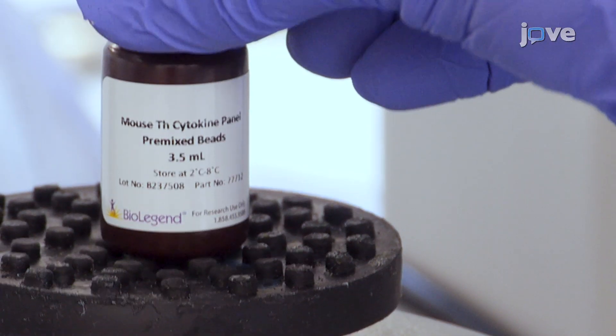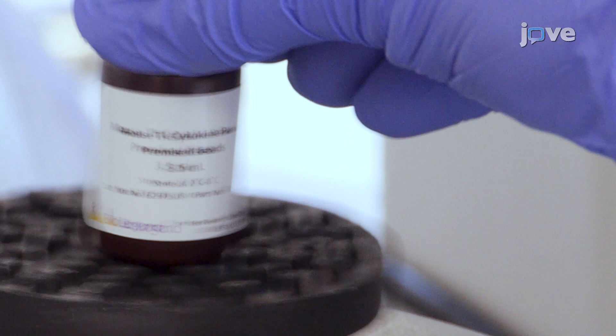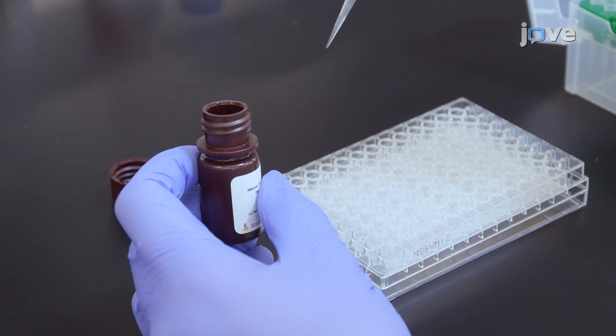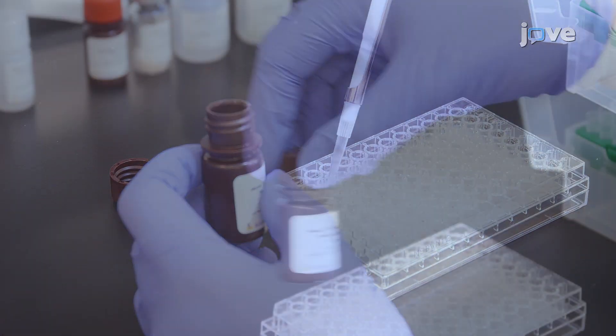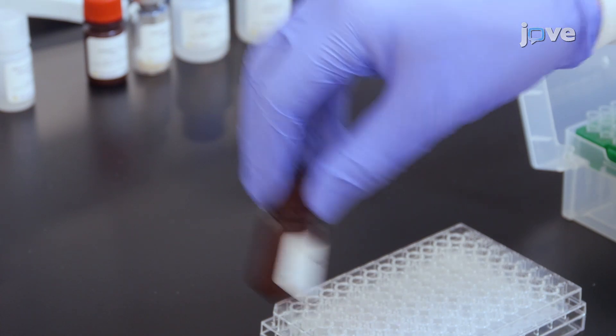Vortex the mixed beads for 30 seconds. Then add 25 microliters of the mixed beads to each well, shaking the bead bottle intermittently to avoid bead settling.